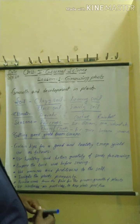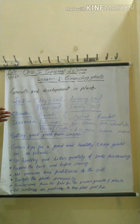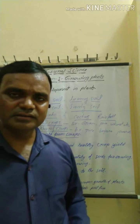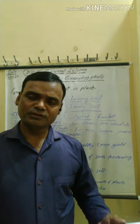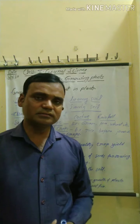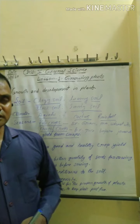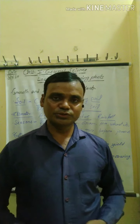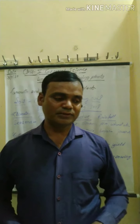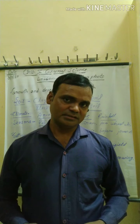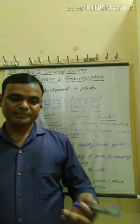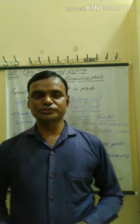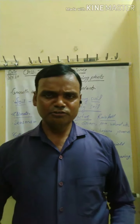So, soil, climate, and seasons are responsible for growing plants. Other factors are also responsible for crops. For example, farmers use chemical fertilizers and manures for yielding crops, and also use pesticides and insecticides for protection against insects and pests, which can damage the crops.